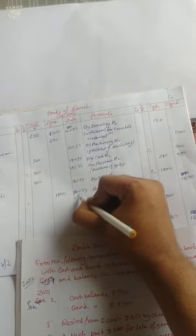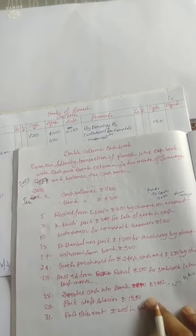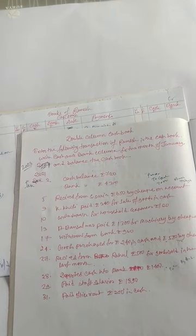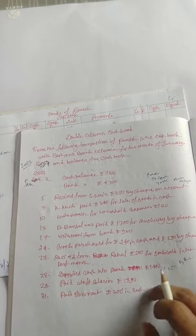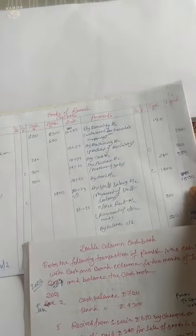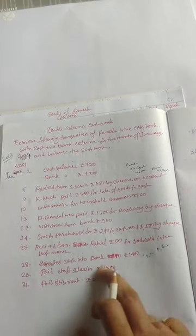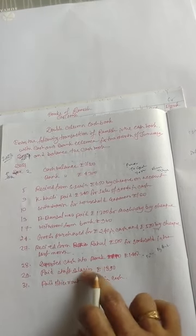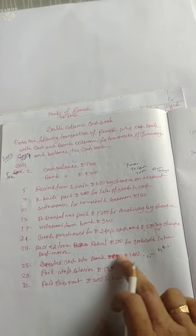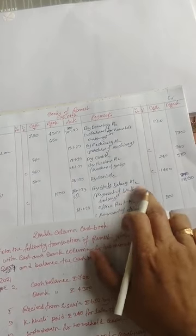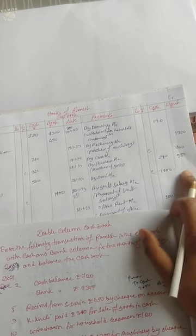Paid staff salary 1,189 — the date is 29th. Since cash is not specifically mentioned, we can assume it is paid by cheque. The entry is: staff salary account debit to bank account. Write 'By staff salary account' with 1,189 in the bank column.